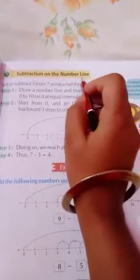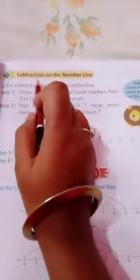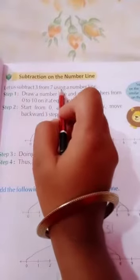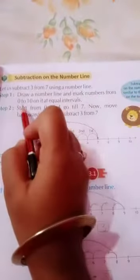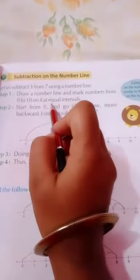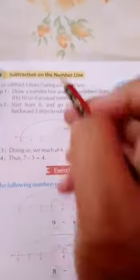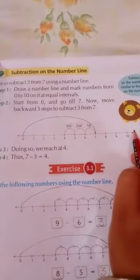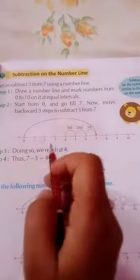So this is exercise 3.1 and the question is subtraction on the number line. Today we are going to learn subtraction on the number line. Let us subtract 3 from 7 using a number line. Step 1: Draw a number line and mark numbers from 0 to 10 on it at equal intervals. Children, how do we draw a number line? And mark numbers from 0 to 10.